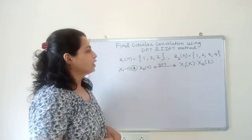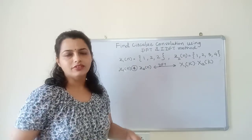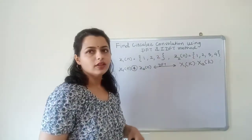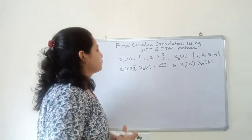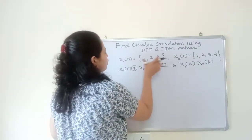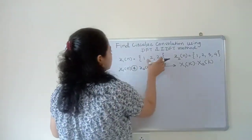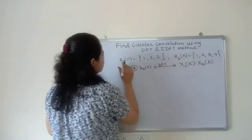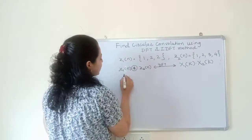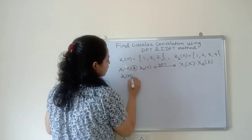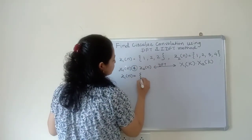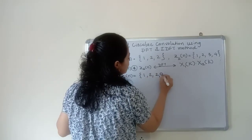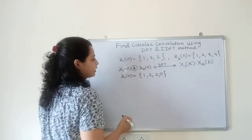We will use the matrix method to find the DFT of x1(n) and x2(n). First we take four samples to match the length, making x1(n) equal to 1, 2, 2, 0 by zero padding x2(n).